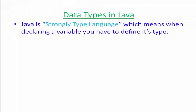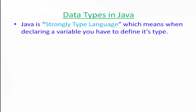Java is a strongly typed language and you have to define the variable type if you are declaring a variable. For example, if you are declaring an integer variable, you have to define its type first, which is not the case with some other programming languages like PHP, where you don't have to define its type when declaring a variable.